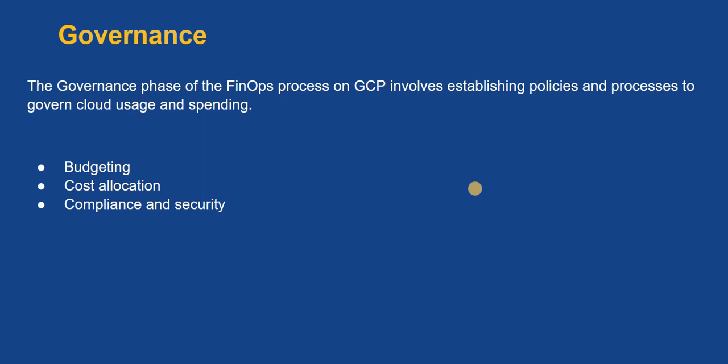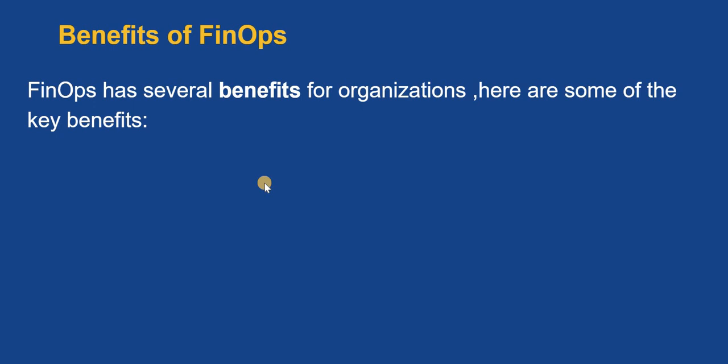Compliance and security is an important part of governance — your security should never be compromised just to avoid unnecessary cost. Security should always be your first focus, apart from cost. Organizations must ensure they are compliant with regulatory requirements, implementing all security measures while also reducing cost. This completes all three phases of FinOps.